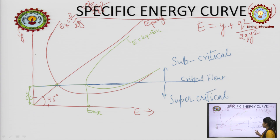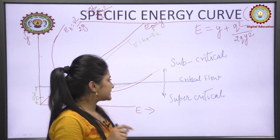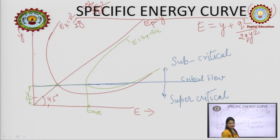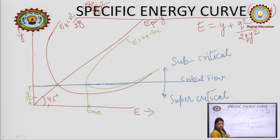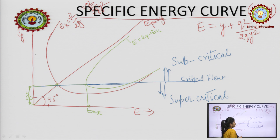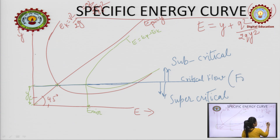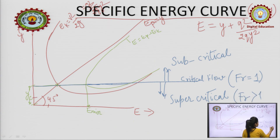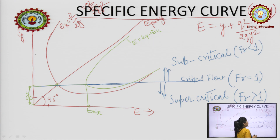To summarize: critical means the minimum condition. Super-critical means a condition less than the minimum value, lying downwards on the curve. Sub-critical means a section above the critical value. For critical flow, Fr = 1. For supercritical flow, Fr > 1. For subcritical flow, Fr < 1. These are the Froude number conditions for each type of flow.